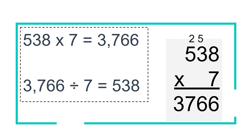Same thing with multiplication. If you're multiplying 538 times 7, you get an answer of 3,766. I was taught the traditional way: 8 times 7 is 56, put down the 6, write a little 5 on top of the 3. 7 times 3 is 21, add 5 is 26, put down the 6, write a 2 above the 5. 7 times 5 is 35, plus 2 is 37. That way certainly works.